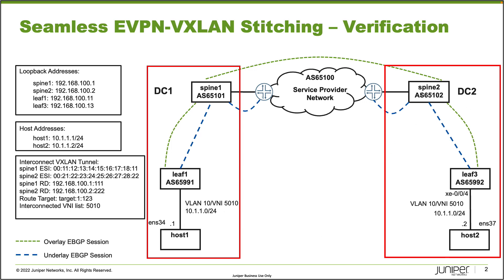In DC2, we have Spine2 and Leaf3, which are QFX devices, and then Host2, which is a part of VLAN 10 and uses VNI 5010 — same VNI and VLAN as Host1. Host2 uses the 10.1.1.2 IP address. We have seamless EVPN VXLAN stitching configured and working. If you're interested in the configuration, I do have other learning bytes that go over it, so please check those out.